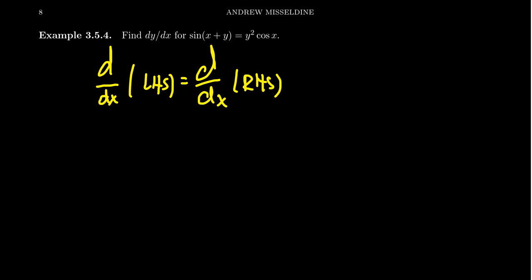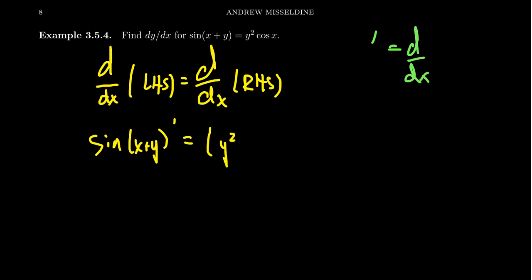For the sake of simplicity, you're going to see me using this little prime notation. When you see that prime notation, notice this is just an abbreviation for taking the derivative with respect to x. So, for example, we need to take the derivative of sine of x plus y — that is, we're taking the derivative with respect to x. We also need to take the derivative of y squared times cosine of x with respect to x.